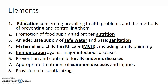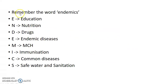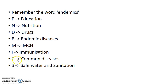The keywords of the elements are highlighted. An easy way to remember them is to remember the word ENDEMICS: E stands for Education, N stands for Nutrition, D stands for Drugs, E stands for Endemic diseases, M stands for Maternal and child health, I stands for Immunization, C stands for Common diseases, and S stands for Safe water and sanitation. So if you remember the word ENDEMICS, you can easily remember the elements of primary health care.